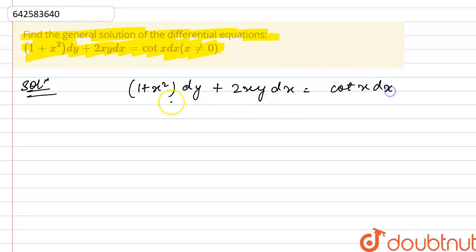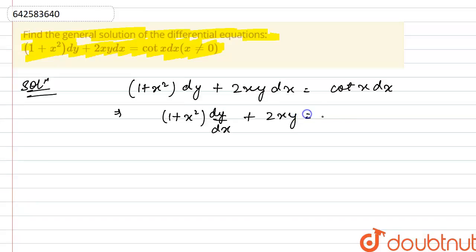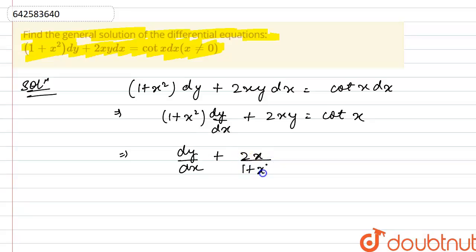Divide both sides by dx. What we will get is 1 plus x square into dy by dx plus 2xy is equals to cot x. Now just divide both sides by 1 plus x square, so we get dy by dx plus 2x divided by 1 plus x square into y is equals to cot x divided by 1 plus x square.